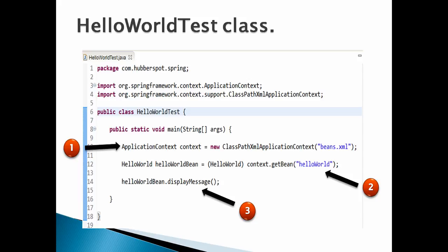The 'getBean' method returns an Object, which we cast back to a HelloWorld object. Without using the 'new' keyword, we have obtained an object of HelloWorld simply by reading an XML configuration file. Number 3: after getting the instance of the HelloWorld bean, we call its 'displayMessage' method, which prints the 'message' value on the console.